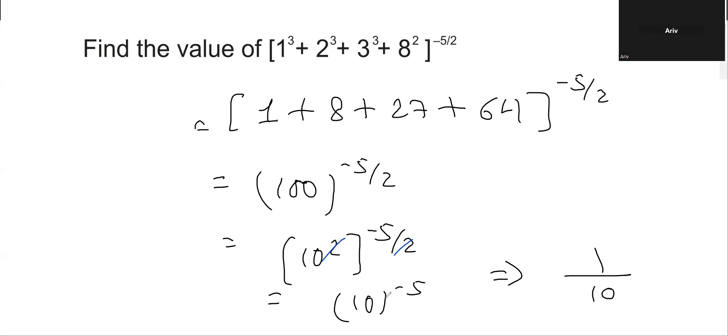Reciprocating the base, we can reverse the power, giving us 1 over 10^5, that is 1 followed by five zeros.